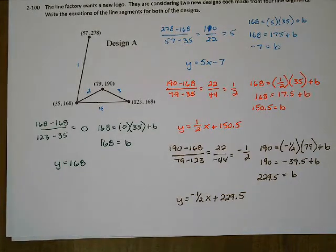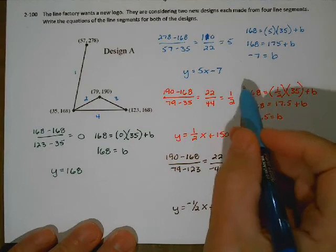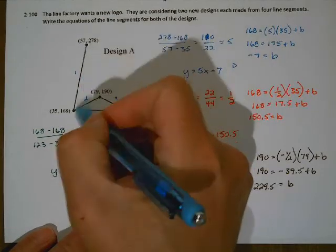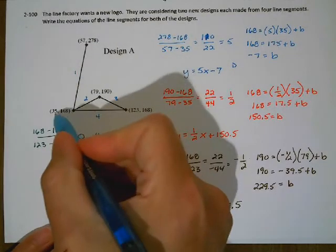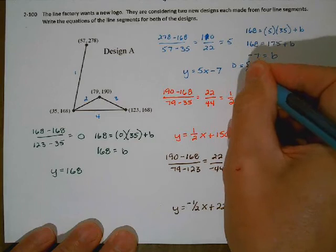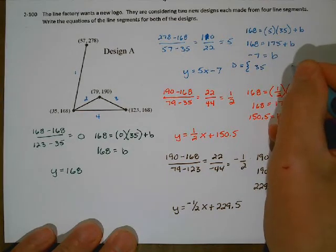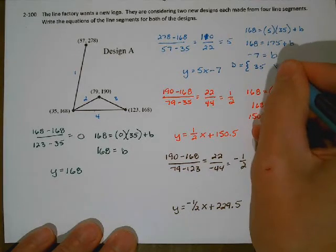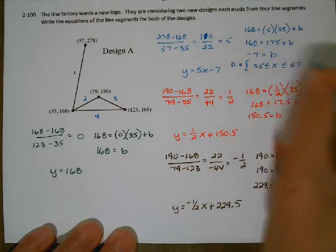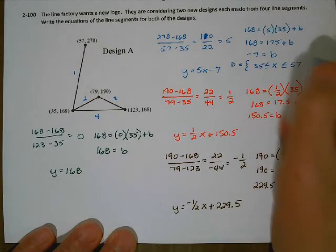Now, notice that these are segments, not lines — they do not continue forever. So in our equation we need to denote what the domain and range are. For the domain of line 1, we look at our x values. The smallest x value is 35 and the biggest x value is 57. So the domain has to be 35 less than or equal to x, less than or equal to 57.